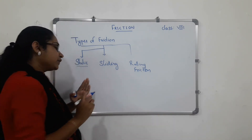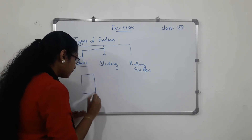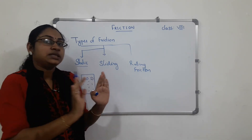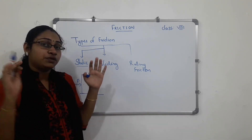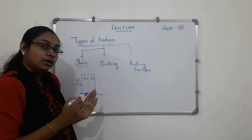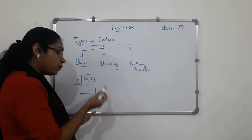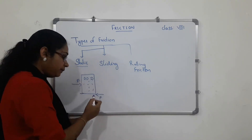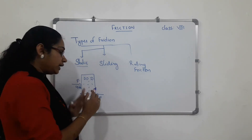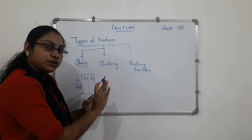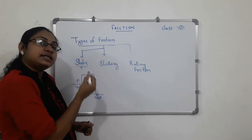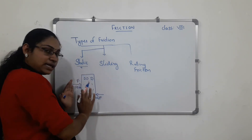Let's take an example of static friction. If we place an object on a surface, there is an opposite force acting on it. If we apply a 10N force, there is a 10N opposite force. This opposite force is called static friction. Static friction acts when a force is applied but the object has not yet moved.